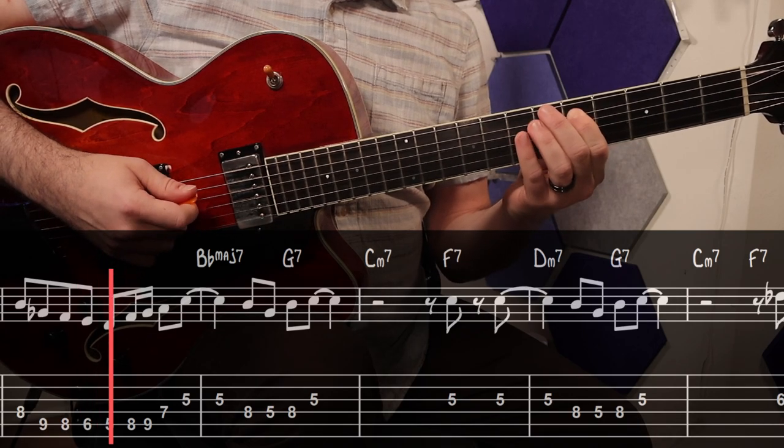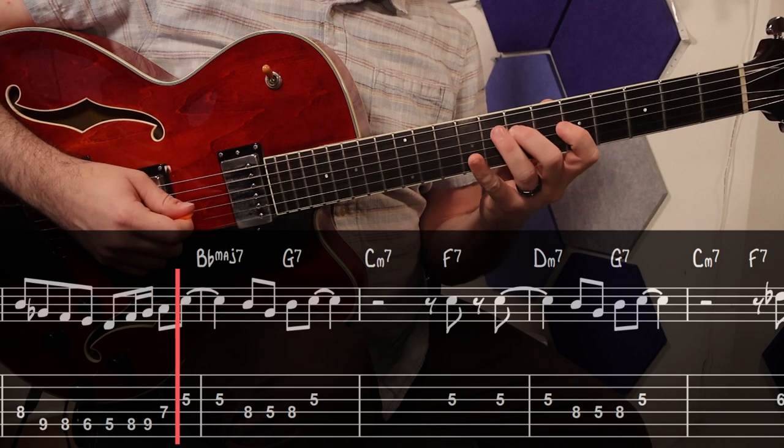Then he plays into the A section with this little diminished lick off the G flat to land on the ninth of the B flat at the next bar.